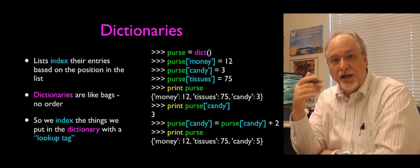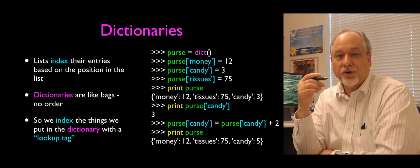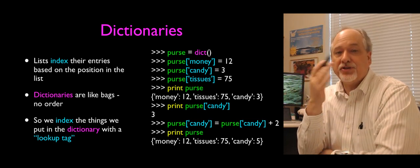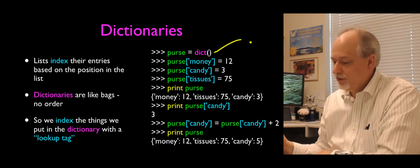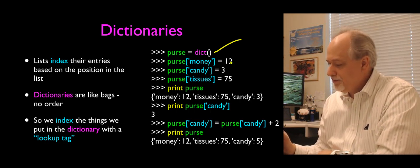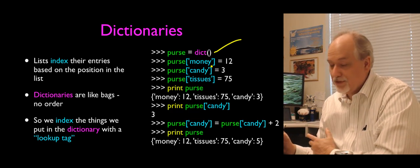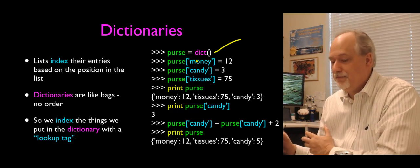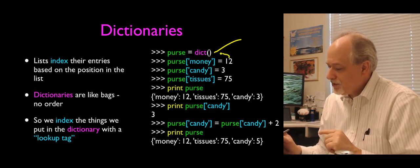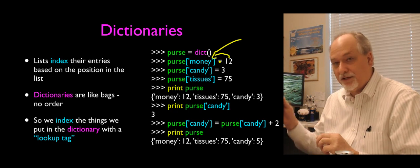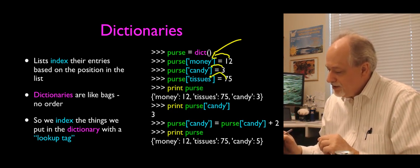The difference between a list and a dictionary is that they both can store multiple values; the question is how we label them, store them, and retrieve them. Here's an example: I'm going to make a thing called purse. I'm going to store in purse — purse sub 'money' equals 12. I'm actually using a string as the index. So I'll stick 12 in my purse with a label 'money', candy is 3, tissues is 75.